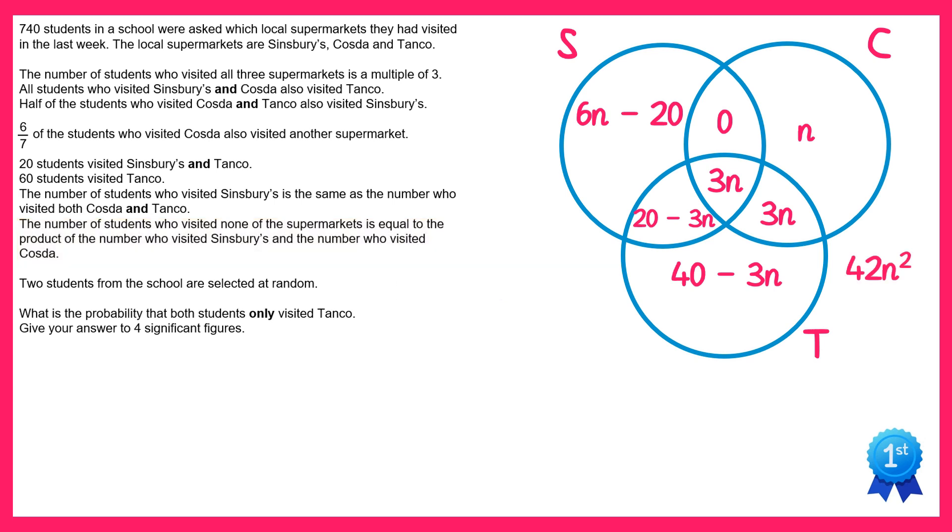Now right at the start of the question we were told there are 740 students in total, so if we add together all of these sections of the Venn diagram it should equal 740. So if we add up all of the parts that we've written down we get this which simplifies to 42n squared plus 7n plus 40, and this must equal 740.